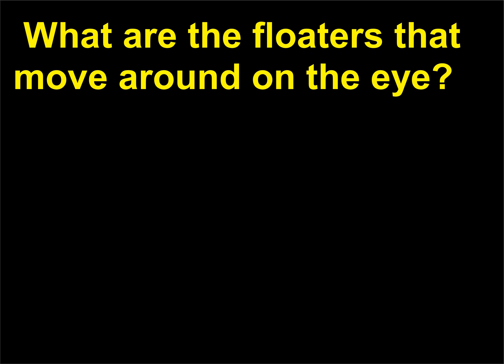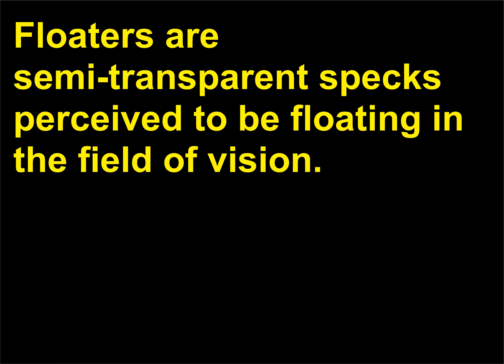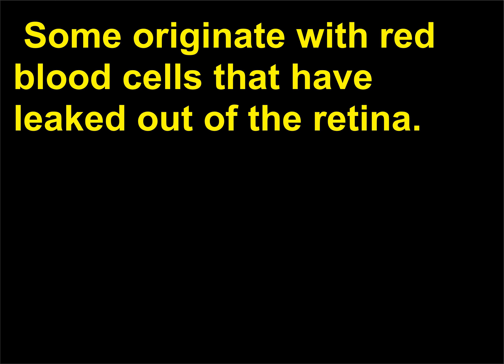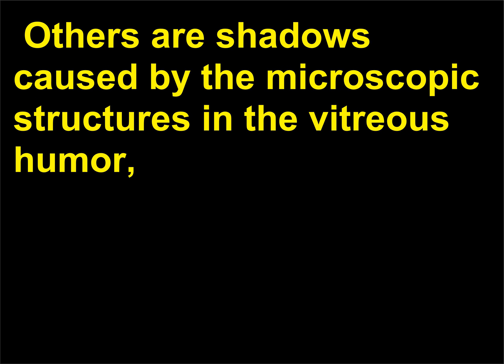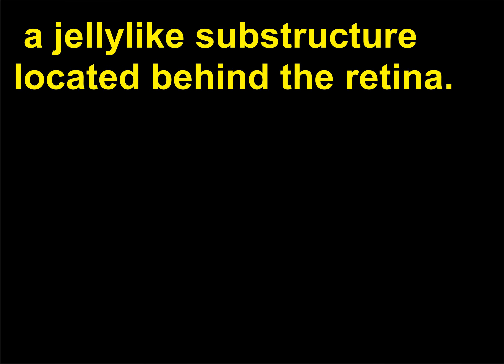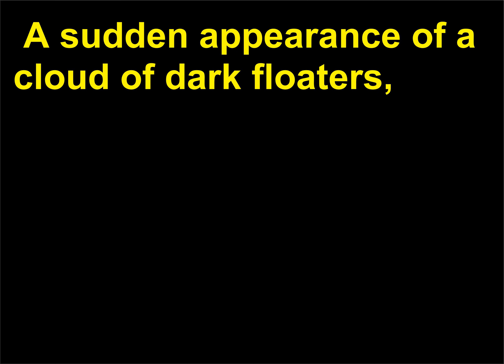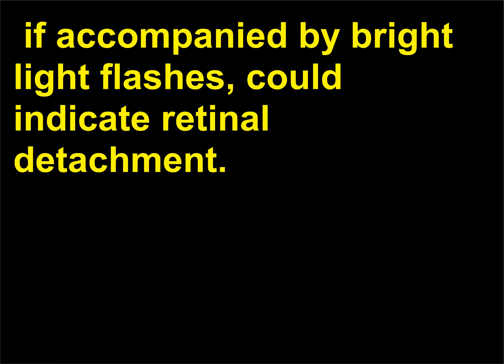What are the floaters that move around in the eye? Floaters are semi-transparent specks perceived to be floating in the field of vision. Some originate with red blood cells that have leaked out of the retina; the blood cells swell into spheres, some forming strings, and float around the areas of the retina. Others are shadows caused by microscopic structures in the vitreous humor, a jelly-like substance located behind the retina. A sudden appearance of a cloud of dark floaters, if accompanied by bright light flashes, could indicate retinal detachment.